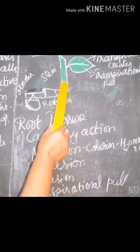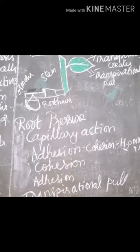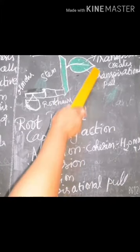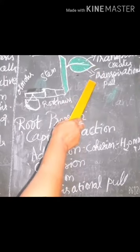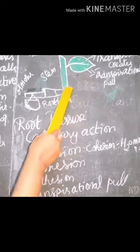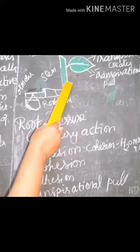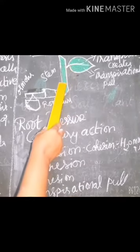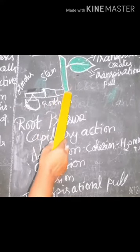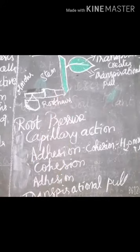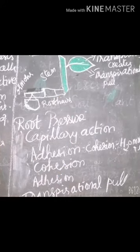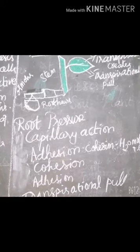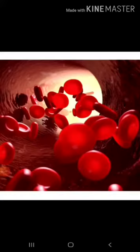The transpirational pull sucks the water column from xylem tubes, and thus water is able to rise up to great heights even in the tallest plants. Next, we will see about the blood.